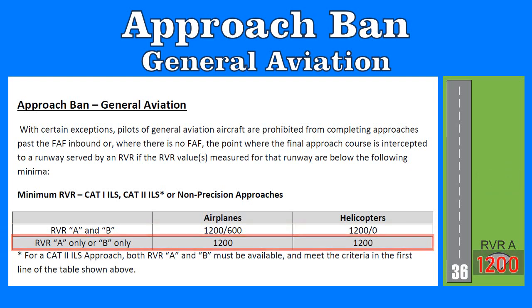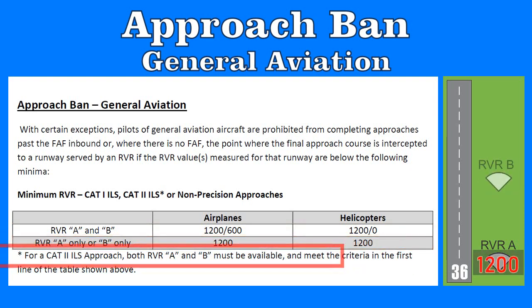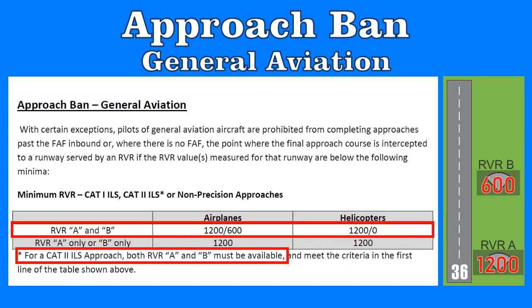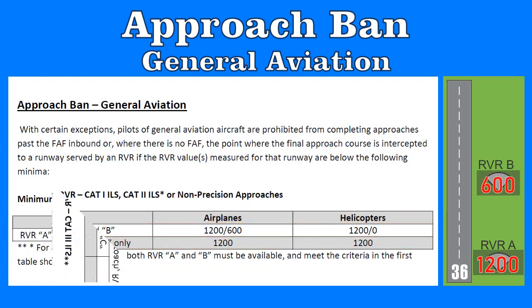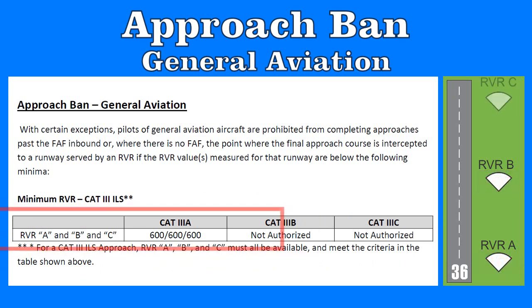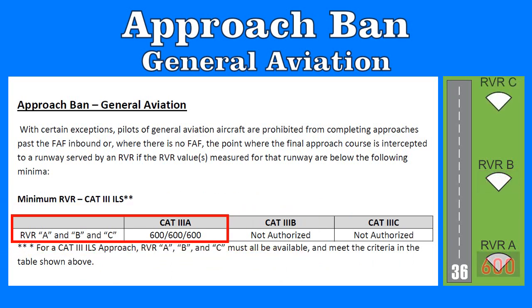For a CAT-2 approach, the minima are the same as CAT-1, except that both RVR Alpha and Bravo are required. If you're conducting a CAT-3 approach under the general aviation rules, RVR Alpha, Bravo, and Charlie must be greater than or equal to 600.